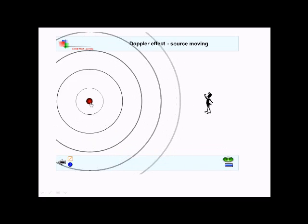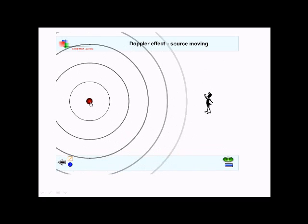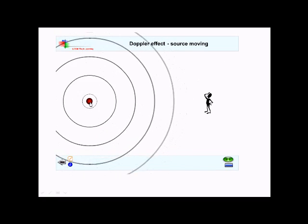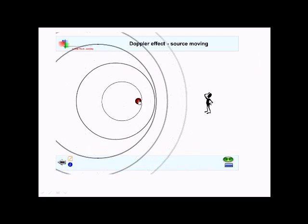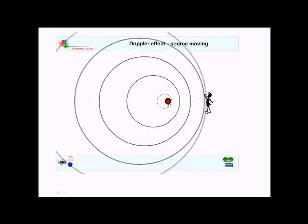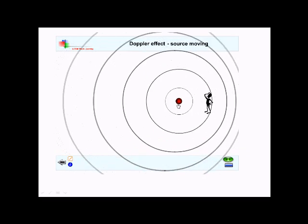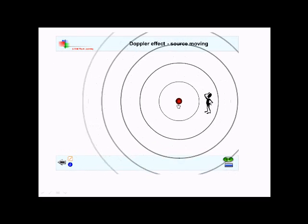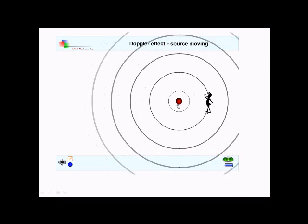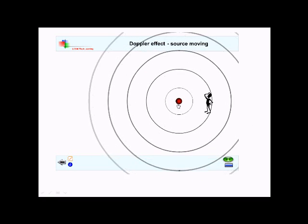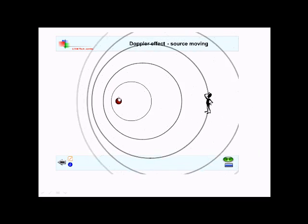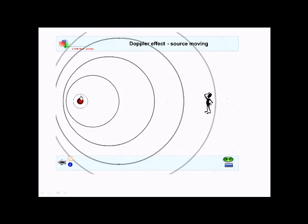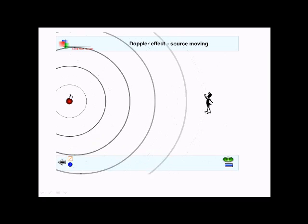If we take sound as the first example, this red object is emitting a sound. As it moves towards the person, you'll notice that the distance between the waves decreases. So we can say the wavelength is decreasing. If that's happening, then the frequency must be increasing and the sound will sound higher. As the object is moving away, the wavelength is increasing, so the frequency must be decreasing and it will sound lower.